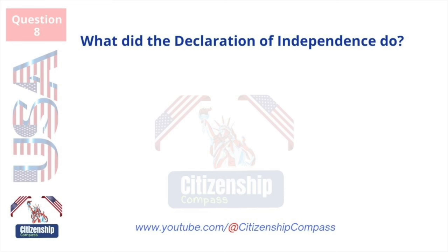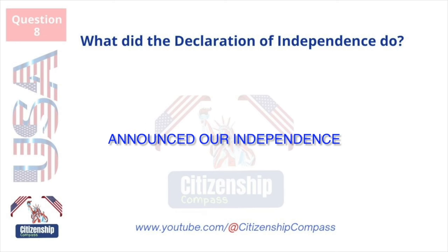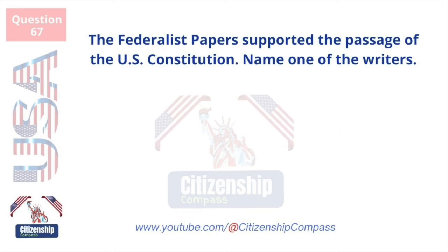What did the Declaration of Independence do? Announced our independence from Great Britain. The Federalist Papers supported the passage of the US Constitution. Name one of the writers. James Madison.